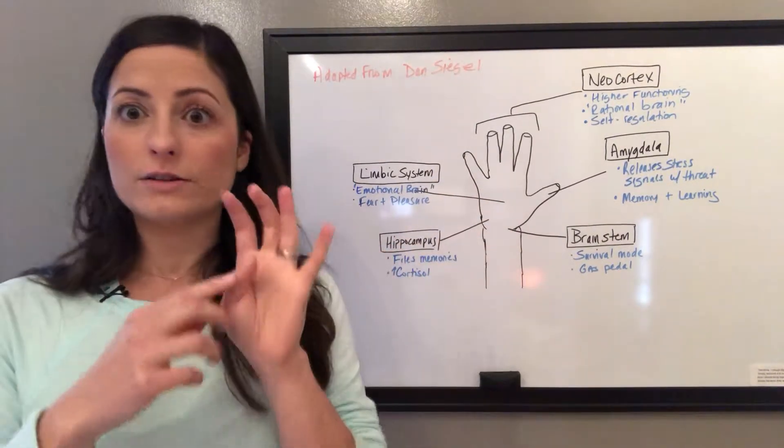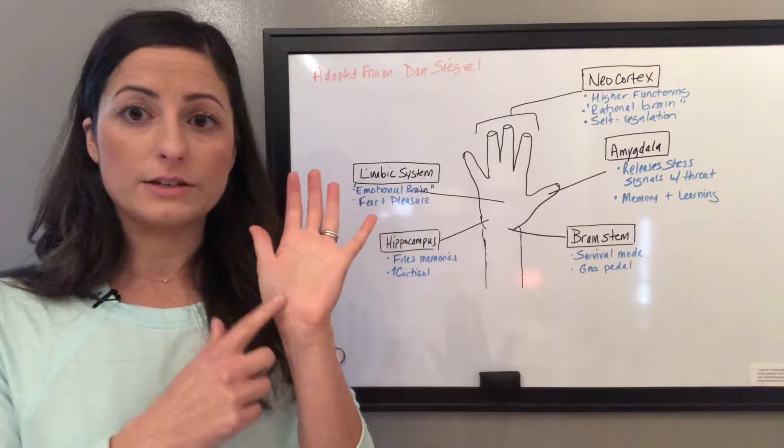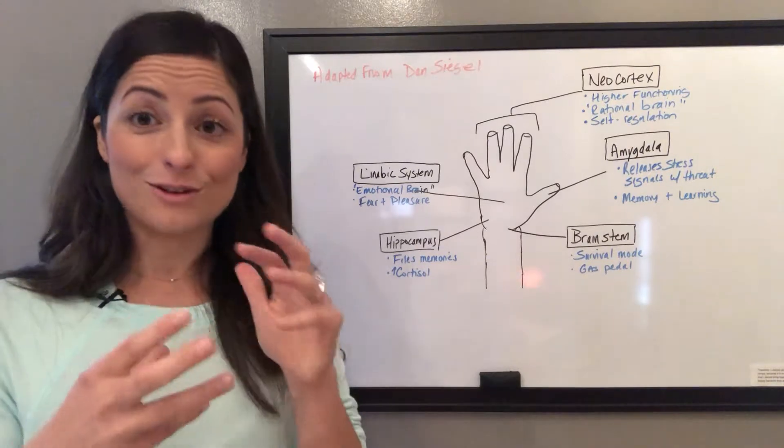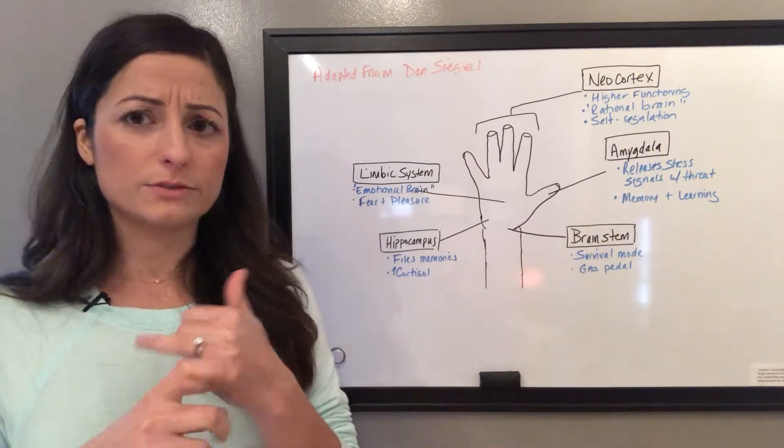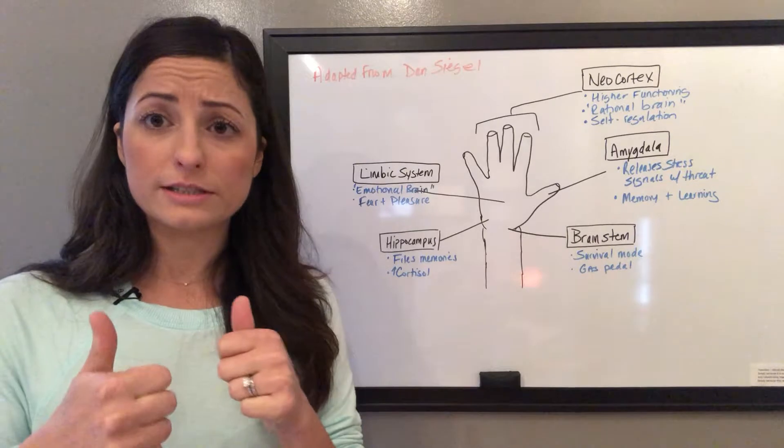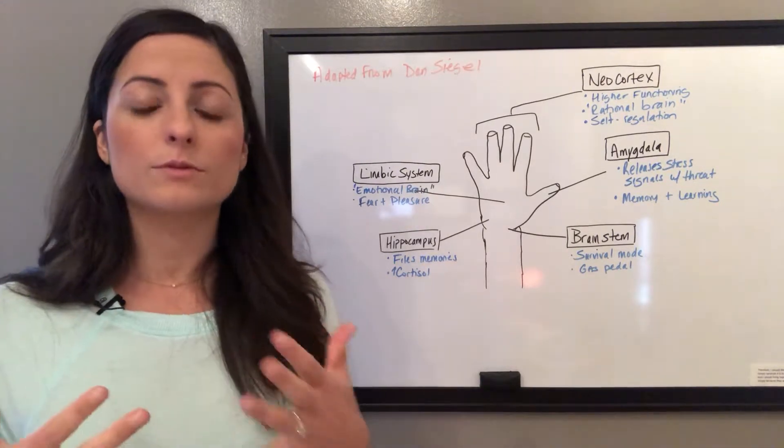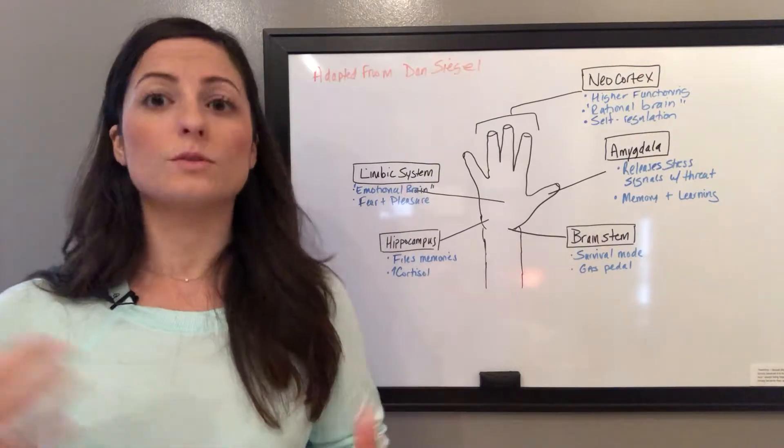The hippocampus is here, in the pinky side right over here. That is also for memory, files memories away, and increases and amplifies stress hormones in our body when we need it, again when we're feeling threat, either a direct threat or a perceived threat.